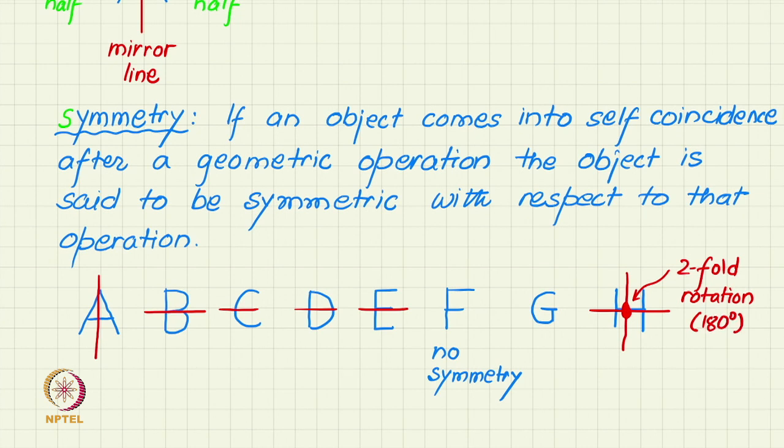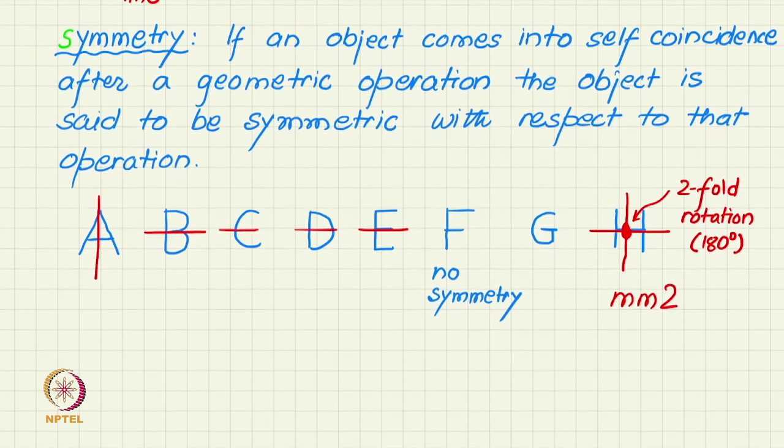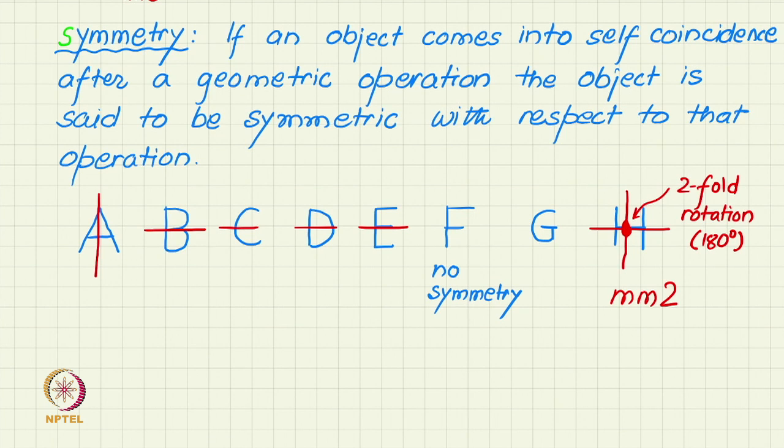This symmetry, as we will see in this course later, is also called an mm2 symmetry. The two m's represent the two perpendicular mirrors, and the 2 represents the two-fold or 180-degree rotational symmetry about the center. This is an interesting exercise I have initiated you into. You can continue with the alphabet letters up to Z and see what symmetries they represent.